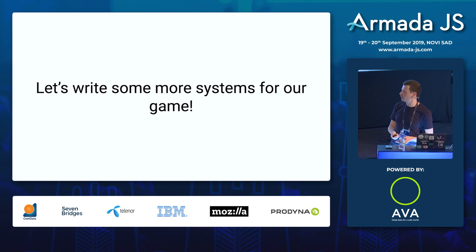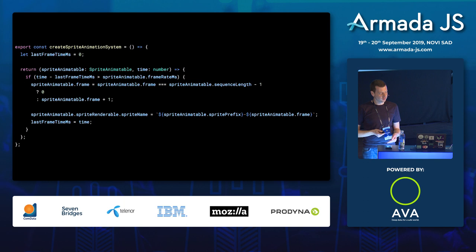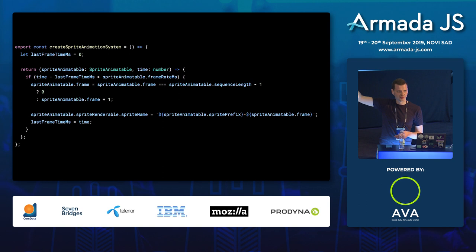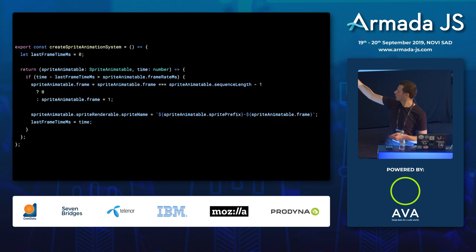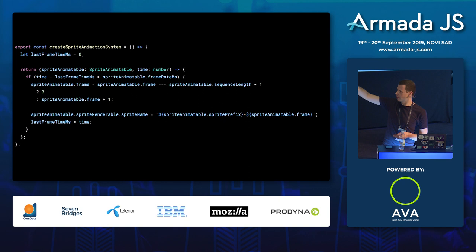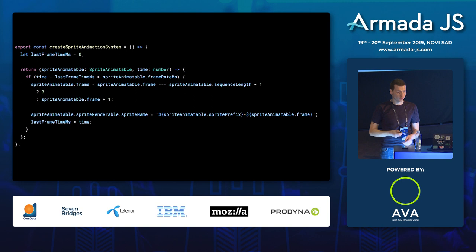The sprite animation system allows animation as a function of time. For each tick of the game loop, if the time has surpassed the given frame rate, we mutate the sprite renderable associated with it, advance the frame, and update the associated sprite renderable to advance its frame. That gives us animation without having to depend on timers.